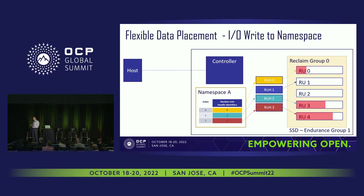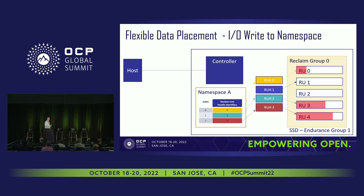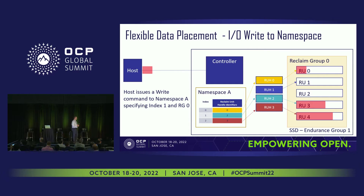I have a namespace that was created with the map, and I have three usages of RUHs: 0, 2, and 3. Following the colors, index 0 goes to RUH0, and RUH0 goes to RU0. There are also partial writes already happening. The host issues a write to namespace A, specifying index 1 and reclaim group 0 — that's the tuple from the host side.